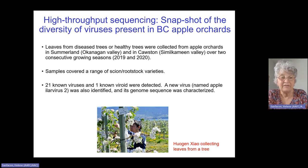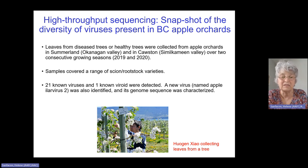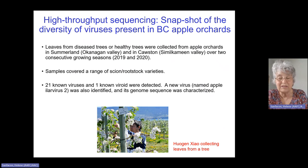We collected leaves from diseased trees or from trees that looked healthy. We did this in apple orchards in Summerland in the Okanagan Valley and also a little bit in Keremeos in the Similkameen Valley, over two consecutive growing seasons, 2019 and 2020. We would have liked to collect samples more widely, but we couldn't.